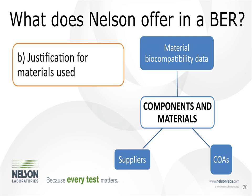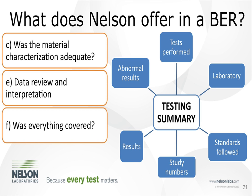The next section is Components and Materials, which can go into as much or as little detail as desired. It's important to lay out your awareness of your components and materials openly for the reviewer, showing transparency about what's in your device. We'll discuss your suppliers, any COAs or COCs (certificates of compliance), and present any material biocompatibility data your suppliers may have — which is great information if you're starting with a biocompatible material. This covers Section B of ISO Clause 7: justification for materials used.